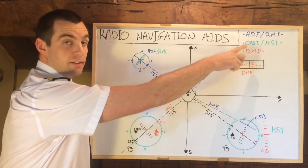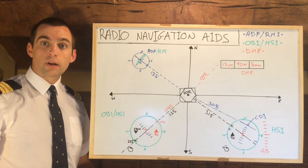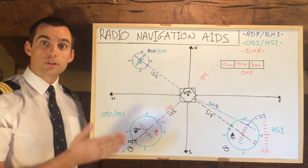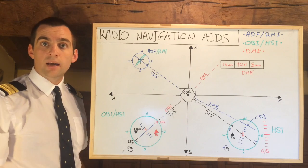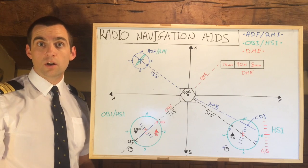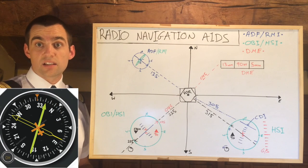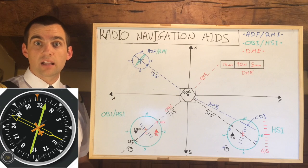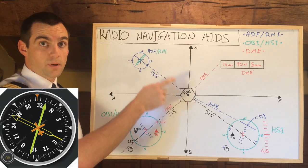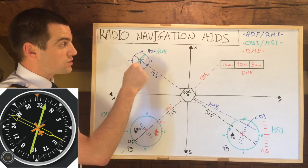Firstly, I'm going to talk about ADF and RMIs. An ADF provides basic bearing information to practically any radio source. We tune in to a frequency and the ADF pointer will point to that VOR. It's an old system, still used today, however it's slowly becoming more and more redundant with the use of VOR and nowadays GPS. An RMI is essentially a two-channel ADF with a compass slaved to the magnetic compass.